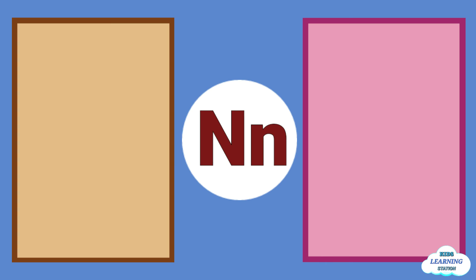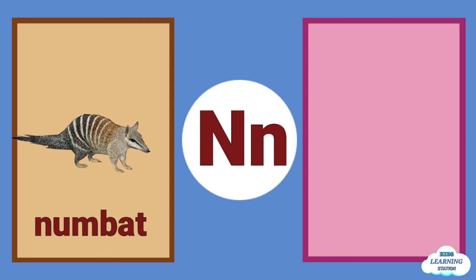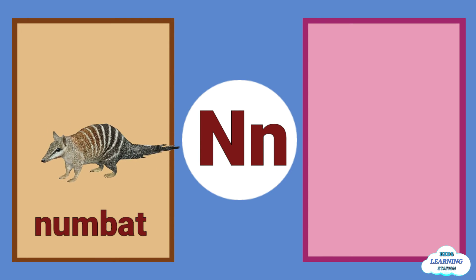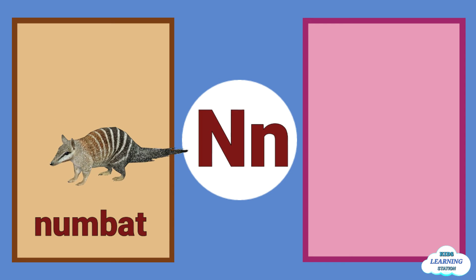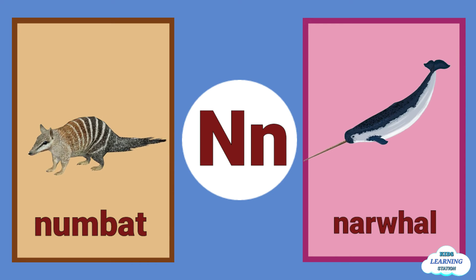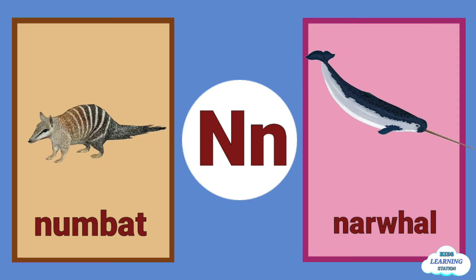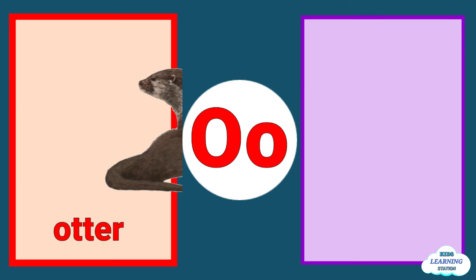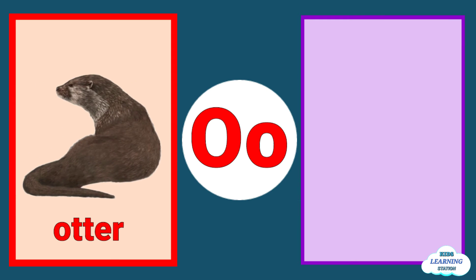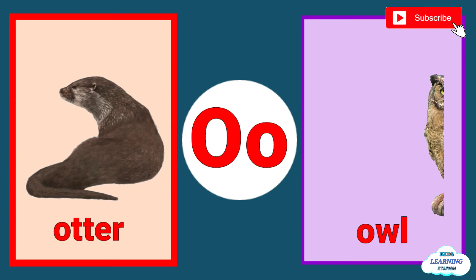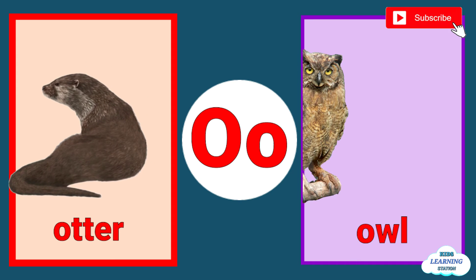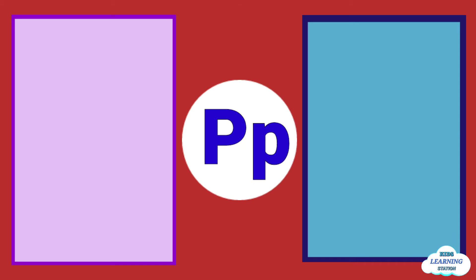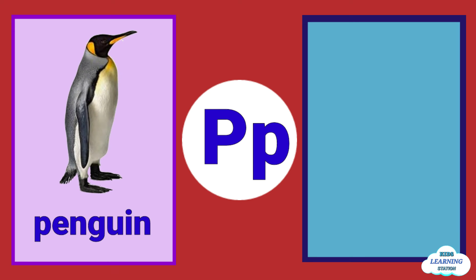N is for numbat. N is for narwhal. O is for otter. O is for owl. P is for penguin.